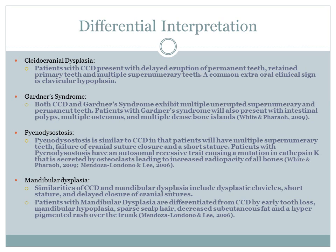Pycnodysostosis is similar to CCD in that patients present with multiple supernumerary teeth, failure of cranial suture closure, and short stature; however, it is autosomal recessive, caused by a mutation in cathepsin K secreted by osteoclasts, leading to increased radiopacity of all bones. Mandibular dysplasia shares dysplastic clavicles, short stature, and delayed cranial suture closure with CCD, but is differentiated by early tooth loss, mandibular hypoplasia, sparse scalp hair, decreased subcutaneous fat, and a hyperpigmented rash over the trunk.